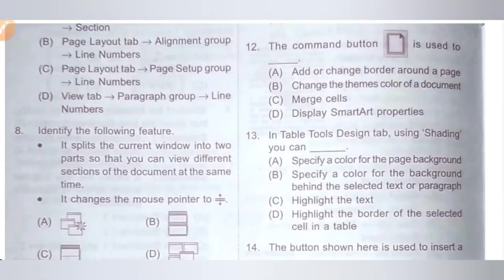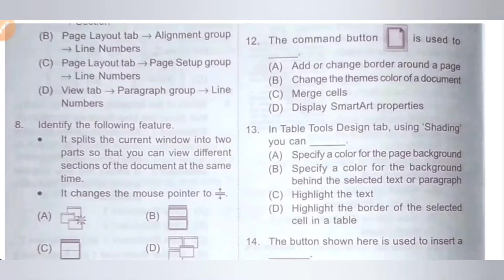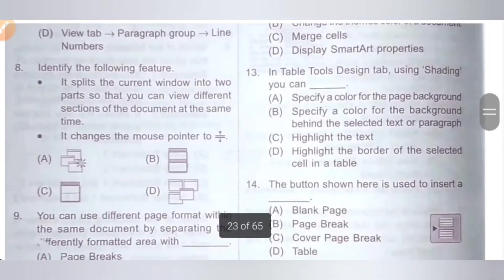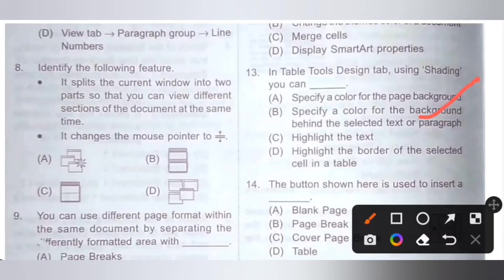Thirteenth question: in the Table Tools Design tab, using Shading you can do what? Option A: specify a color for the page background. B: specify a color for the background behind the selected text or paragraph. C: highlight the text. D: highlight the border of the selected cell in a table. Using Shading you can specify a color for the background behind selected text or paragraph. Option B is the correct answer.